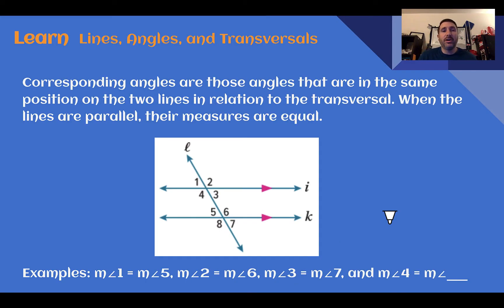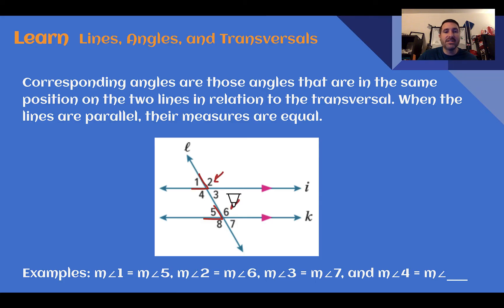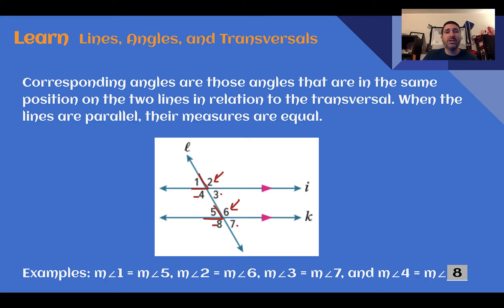A third type of angle pair is called corresponding angles — they are in the same position on the two lines in relation to the transversal. When the transversal cuts parallel lines, they also have equal measures. Angle one and angle five are corresponding, angle two and angle six, angle three and angle seven, and angle four with angle eight all have the same measure. So alternate interior, alternate exterior, and corresponding angle pairs are all equal.